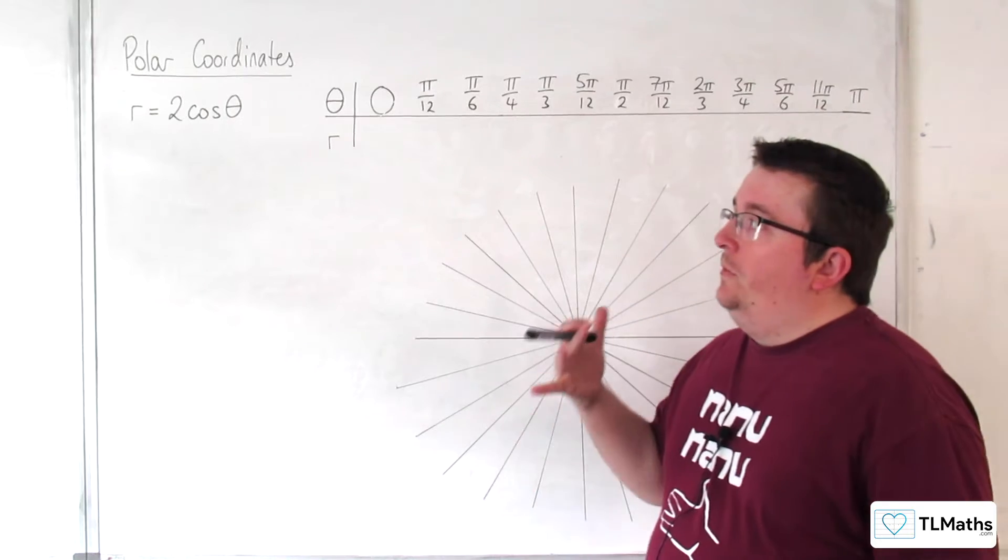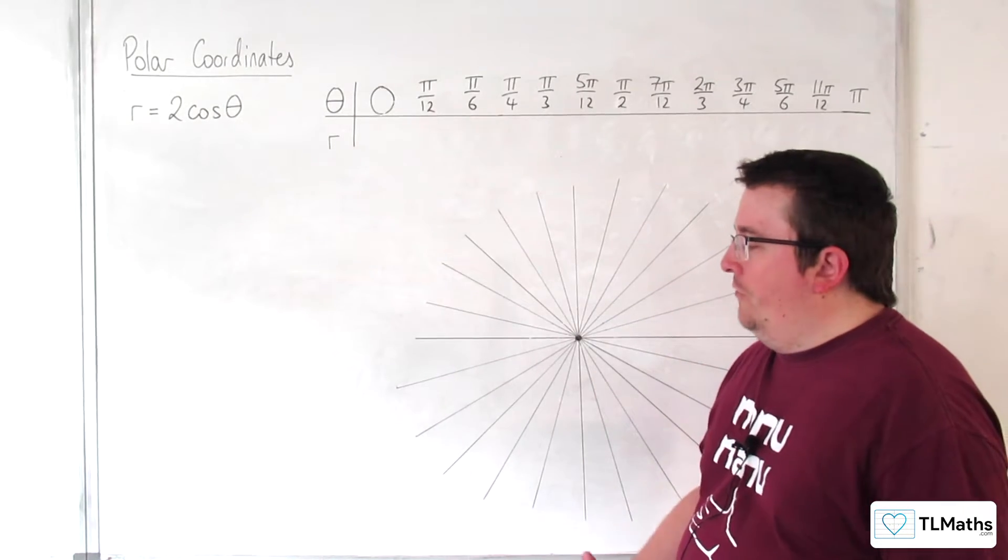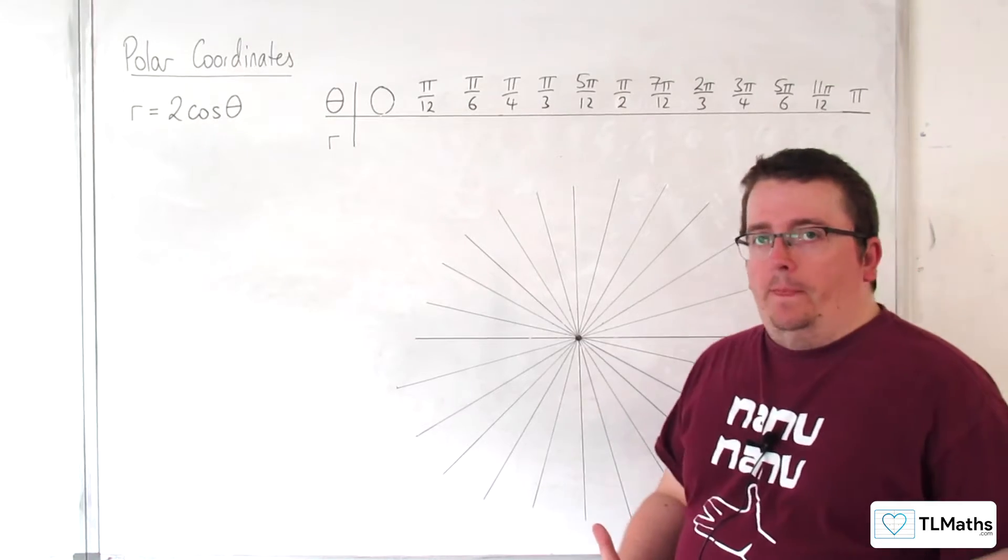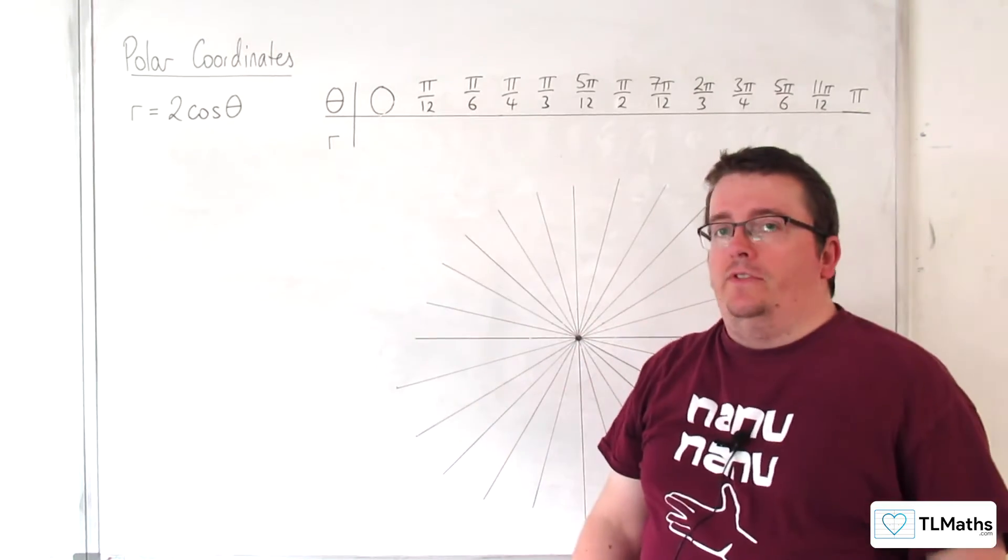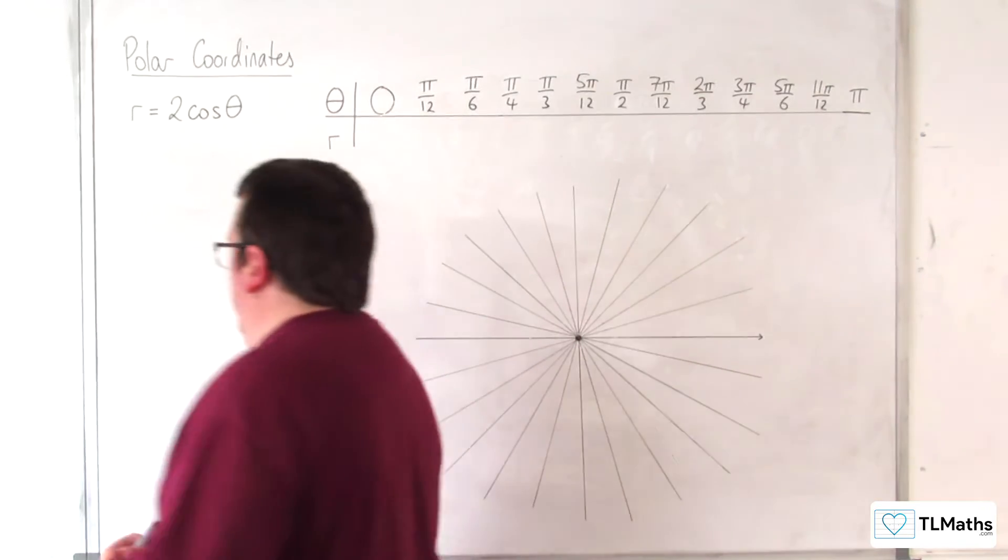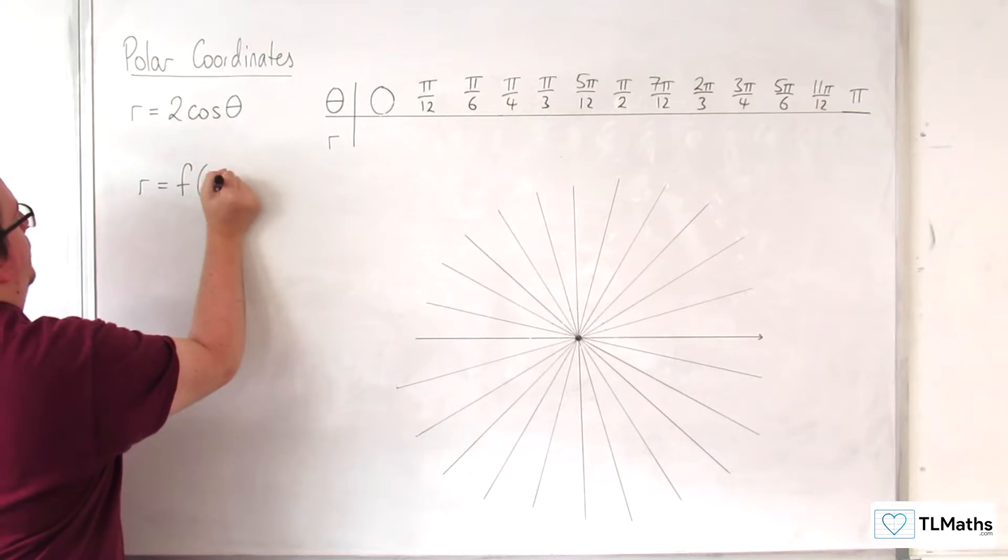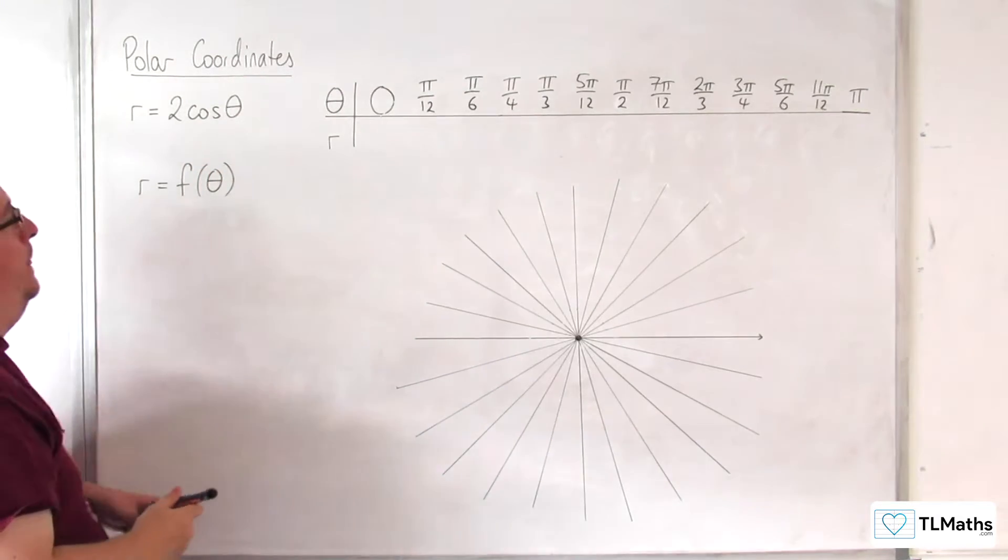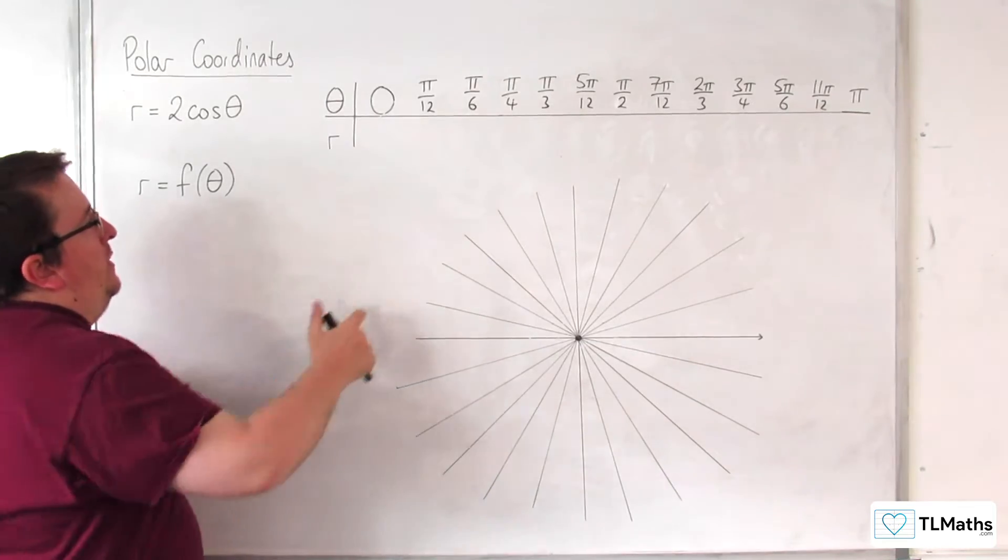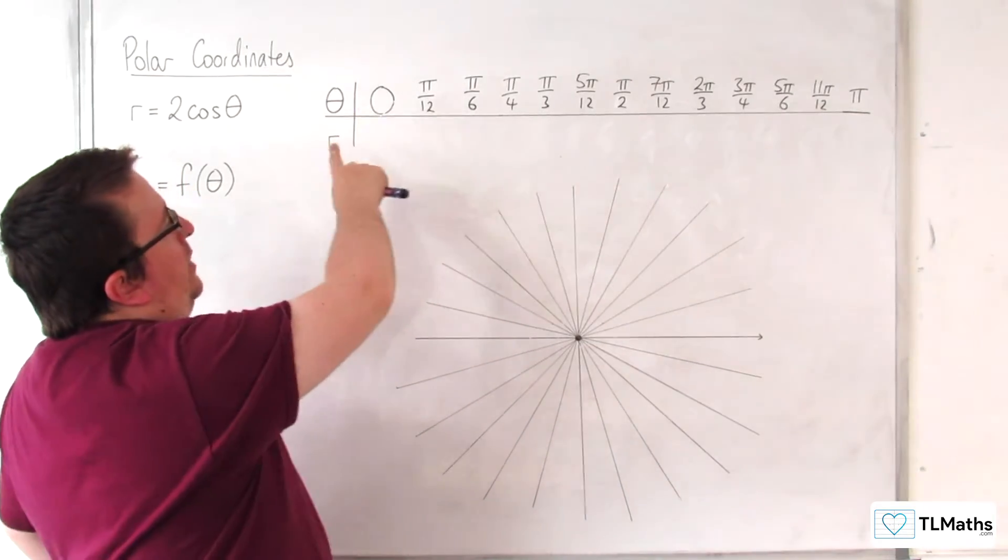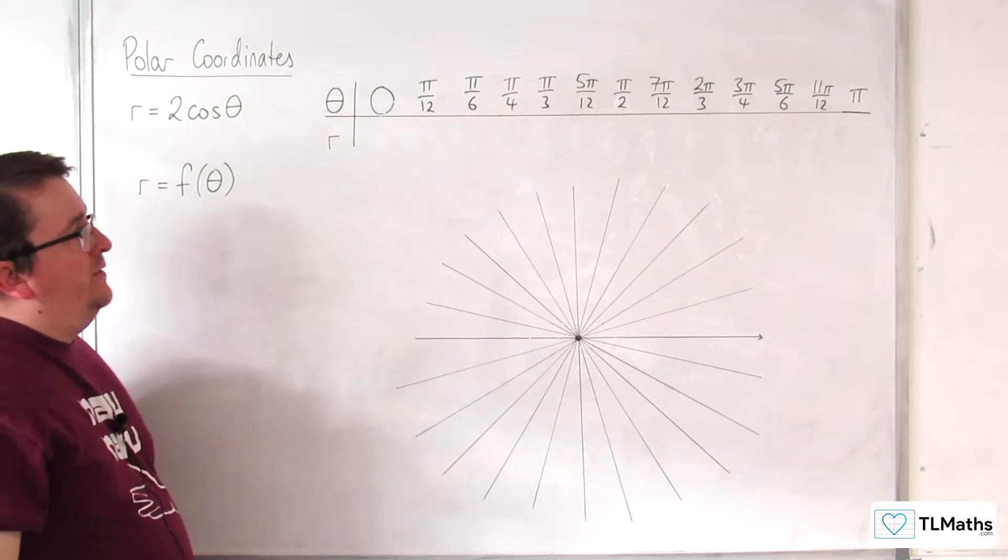In this video, we're going to be introduced to polar curves, and I'm going to start off by just plotting one. The one I'm going to plot is r equals 2 cosine theta. Polar functions are of the form r equals some function of theta. What I'm going to do is substitute in the values from 0 to pi, going up in intervals of pi over 12, into r equals 2 cosine theta.